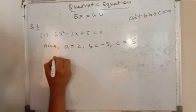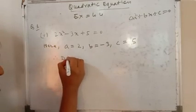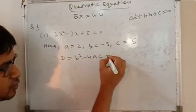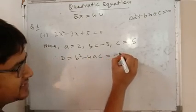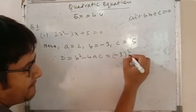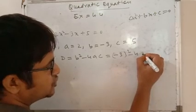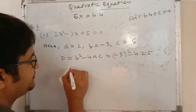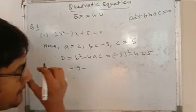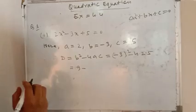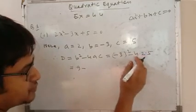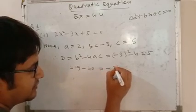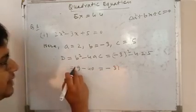First of all we will find D. Therefore D, for discriminant, equals to b² minus 4ac. b² means here (-3)² minus 4, a is 2, into c is 5. So it is 9 minus 40.